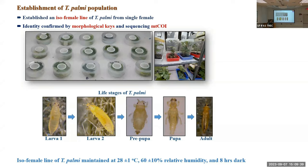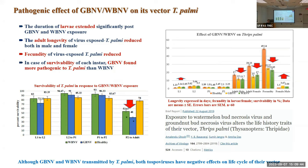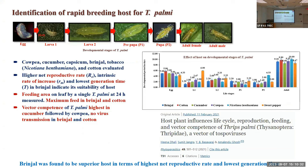Tospoviruses are transmitted by thrips, but do they also have a negative effect on their vector? To study this, we examined the effect of GBNV (Groundnut Bud Necrosis Virus) and WBNV (Watermelon Bud Necrosis Virus) on Thrips parvispinus. We found that when thrips are exposed to viruses, larval stages are extended, adult longevity is reduced in both males and females, and fecundity is also reduced. GBNV was more pathogenic to Thrips parvispinus than WBNV, with the lifespan reduced significantly, and we were continuously unable to maintain the thrips population in the lab.